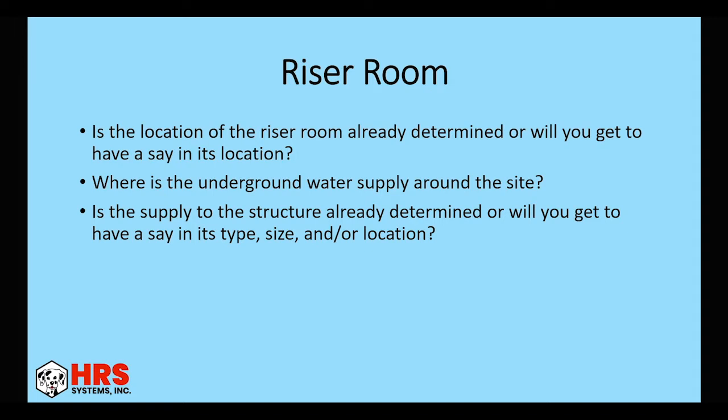Then is the location of the riser room already determined or will you get to have a say in where it's going? If they put the riser room in the back of the building and the underground is coming into the front, obviously you're going to have to run new underground around the riser. So that's going to decrease your water supply. Also, again, if you can loop it, then you can put the riser in the best hydraulically demanding place. And then do you get to have a say in the pipe that's being used? So PVC, ductile iron, these things can all help. Again, also size is a major issue. So if you can have a say in all these things, your water supply is going to be better and could help you get around having a pump. But if these are all already determined, you're kind of stuck with the choices that have been made for you.